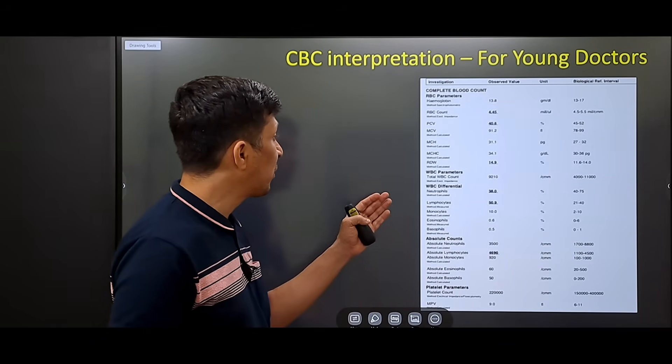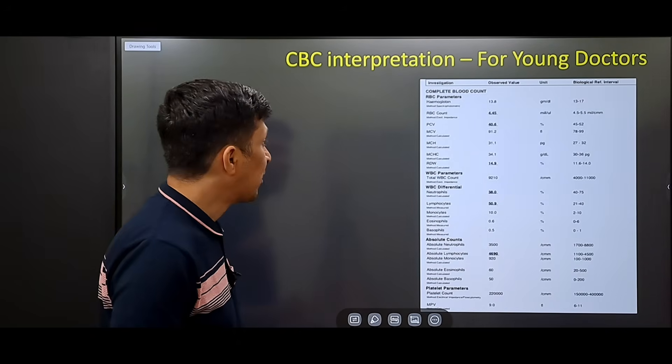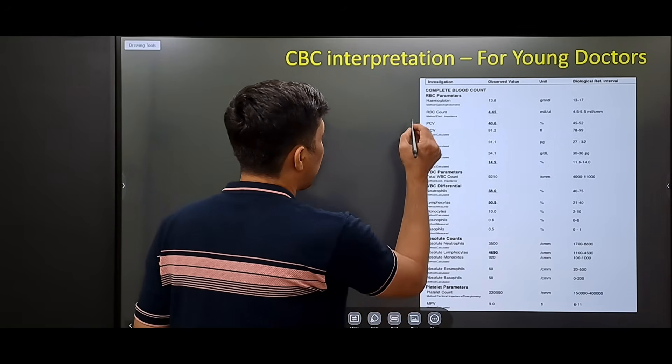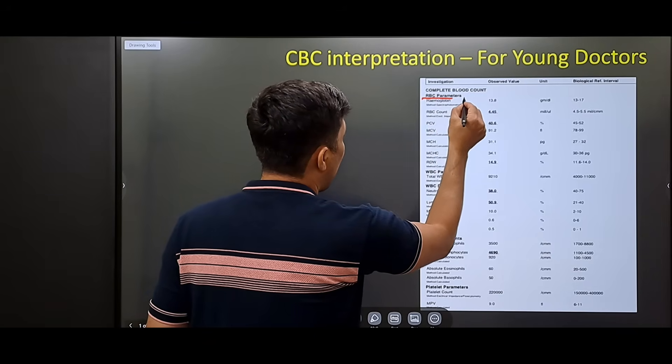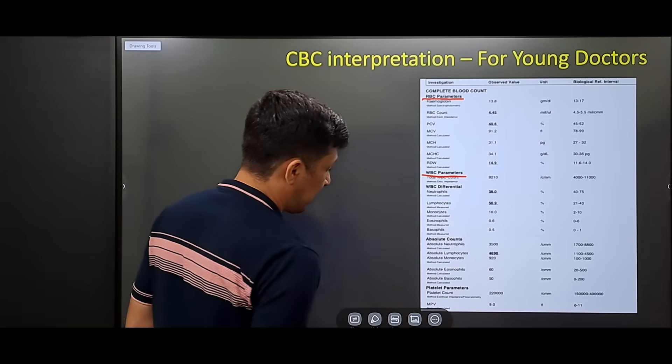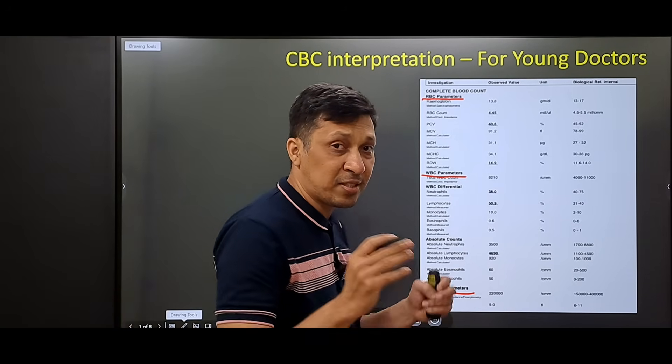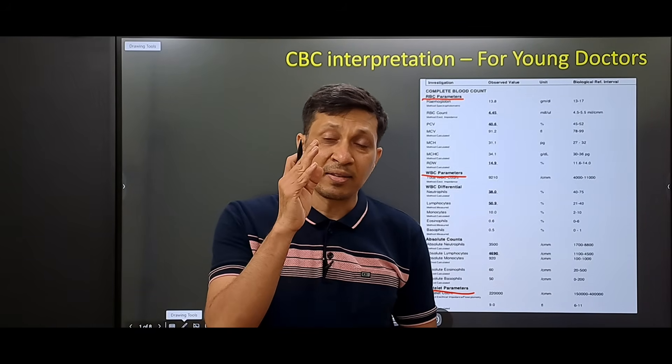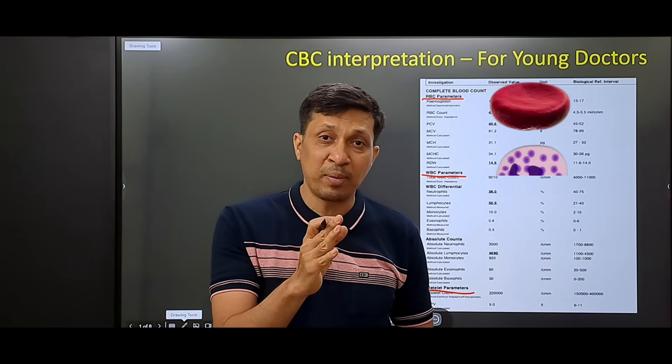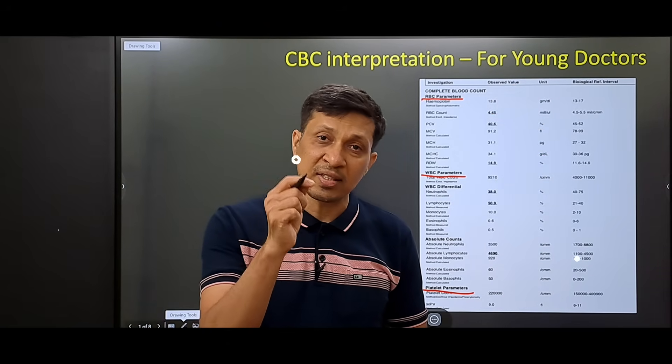Before going into the steps, let's see how the CBC report is divided. CBC report mainly consists of 3 types of parameters. The first is the RBC parameter, then there are WBC parameters and last is the platelet parameters. These parameters represent the cells that are present in the blood: red blood cell, white blood cell and platelets respectively. Now, let's go into the actual steps.